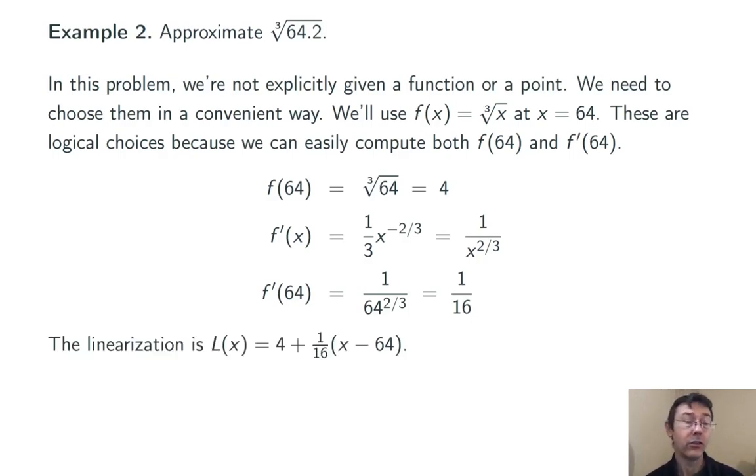So the linearization is f of c plus f prime of c times x minus c, or 4 plus 1 over 16 times x minus 64. Plugging in 64.2, I'm going to get 4 plus 1 over 16 times 0.2, and 1 over 16 times 1 fifth, which is 321 over 80, or 4.0125.